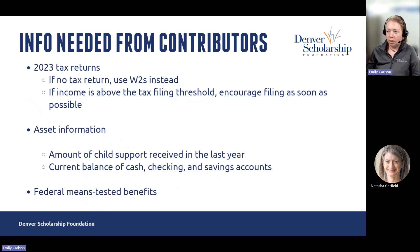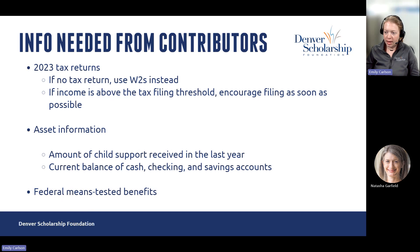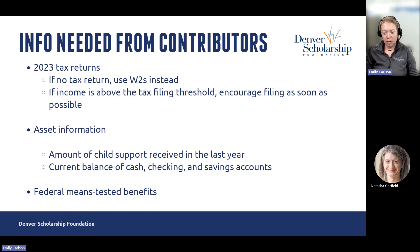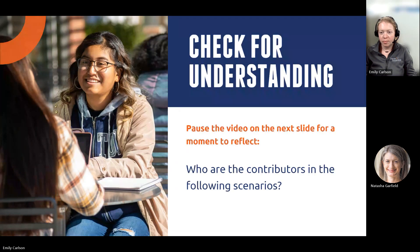The information contributors will include on the FAFSA or CASFA — this year it will be 2023 tax returns, always from the previous tax year. If they didn't file taxes and have no tax return, you can use W-2s. But if income is above the tax filing threshold, which can be found in the binder, gently encourage the family to file taxes as soon as possible. We also have legal and tax resources available to help. Other information needed includes asset information such as child support received in the last year if applicable, and the current balance of cash, checking, and savings accounts. Potentially other asset information depending on the family's financial situation, and federal means-tested benefits if applicable.